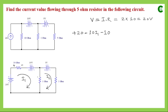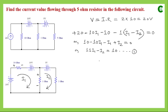Then we have the 10Ω resistance, with I1 flowing from higher to lower potential, giving a voltage drop of 10×I1, taken as negative. Then the 10V voltage source traversed from positive to negative terminal gives −10V. Then the 1Ω resistor, where both loop currents flow — when analyzing the first loop, the net current is I1 − I2, so the voltage drop is 1×(I1 − I2), also taken as negative. Setting the algebraic sum to zero gives our first equation.